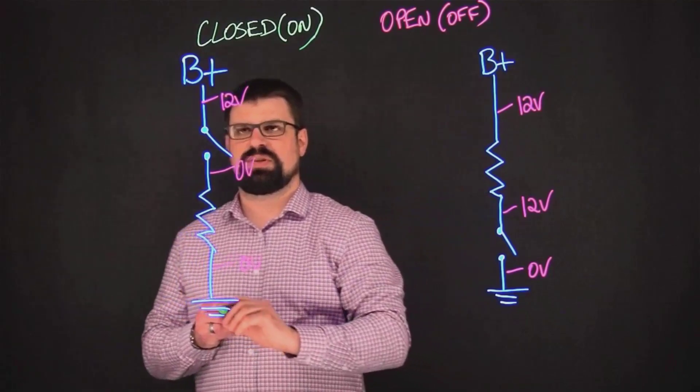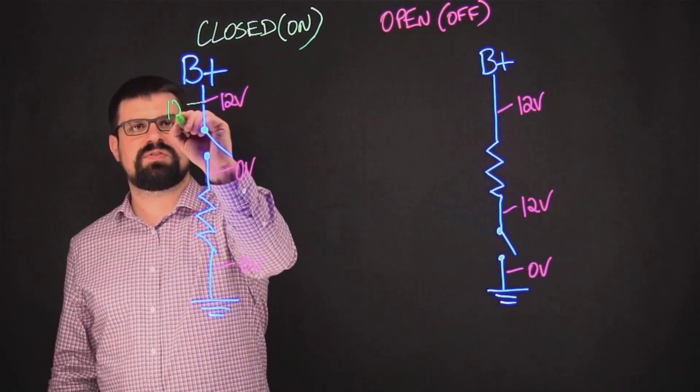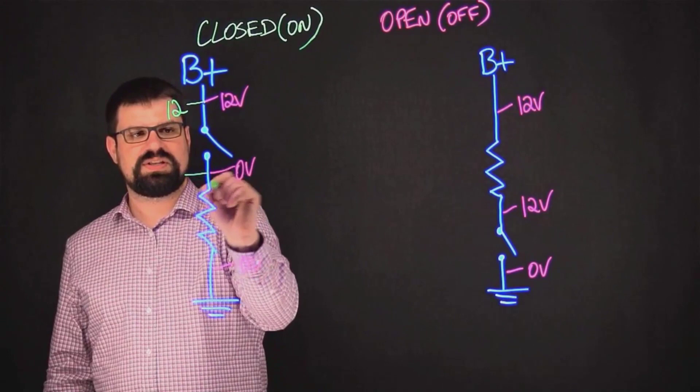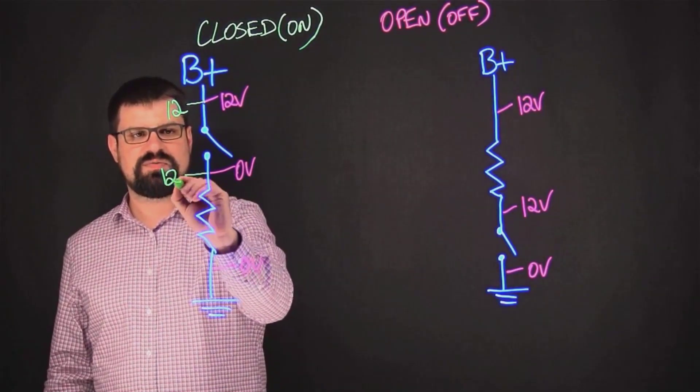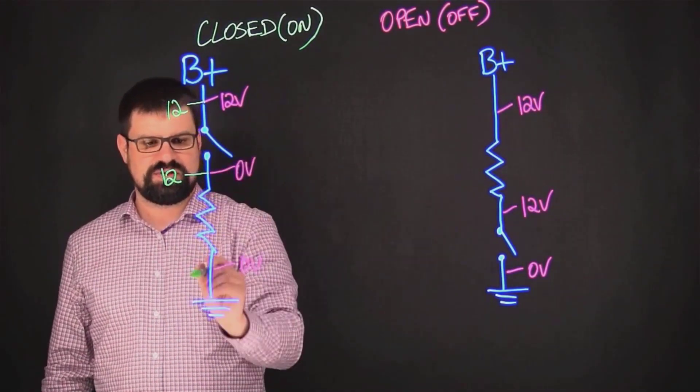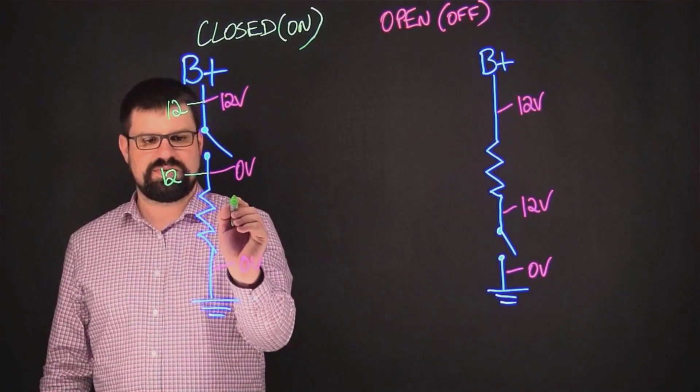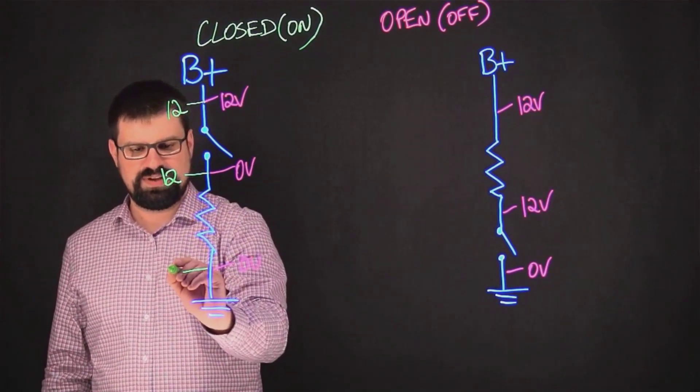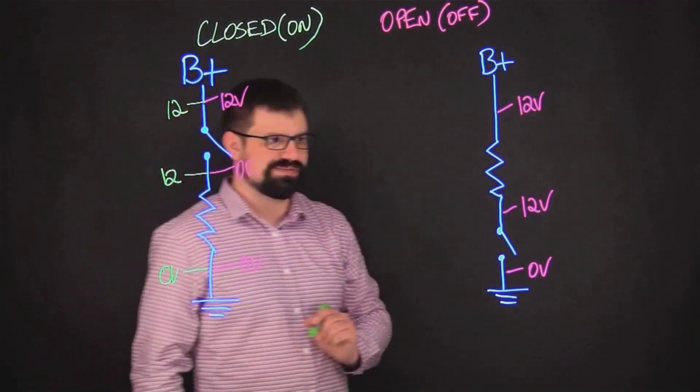Alright, let's take a look with the switch closed. Still have 12 volts up here, and the one thing that's going to change is you're now going to have 12 volts here instead of zero, because the switch is closed. That resistor right there is going to take the voltage drop, and so you're still going to have zero volts on the ground side.